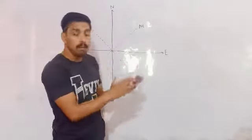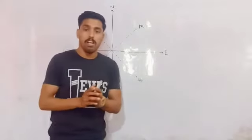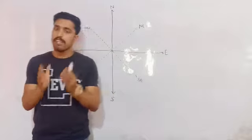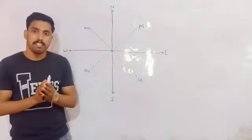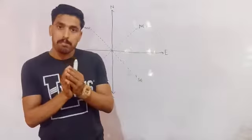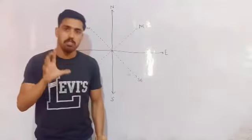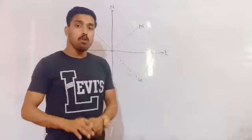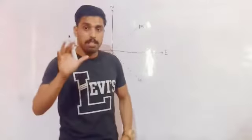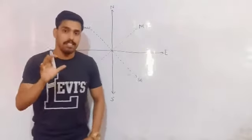So now, we have seen reasoning classes. You can see that in every competitive exam, there is a section of reasoning — minimum 25 to 35 marks. So, one important topic is direction sense. The first topic is your direction sense.